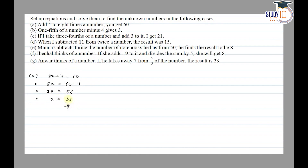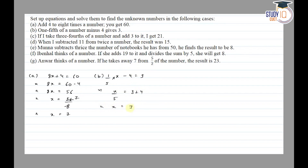So x is equal to 7. Part b: 1/5th of a number minus 4 gives 3. So the number is x. The equation is: 1/5 into x minus 4 equals 3. So x by 5 is equal to 3 plus 4 — shifting the 4. So x by 5 equals 7, then multiplying both sides by 5: x is equal to 35.